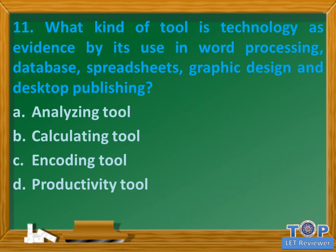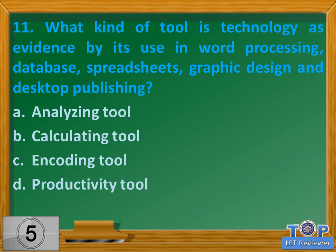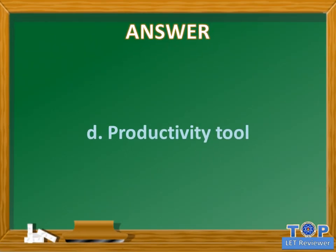Question number eleven: What kind of tool is technology, as evidenced by its use in word processing, database, spreadsheets, graphic design, and desktop publishing? A. Analyzing tool. B. Calculating tool. C. Encoding tool. D. Productivity tool. Answer: D. Productivity tool.